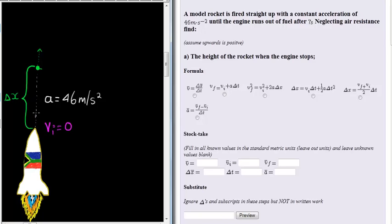The other thing that we do know is the time during which it is accelerating. They tell us that the engine runs out of fuel after seven seconds, so we also know delta T is equal to seven seconds. And there we have three parameters and a fourth one that we want to calculate, so we want to use a formula that has delta X, delta T, acceleration and initial velocity.